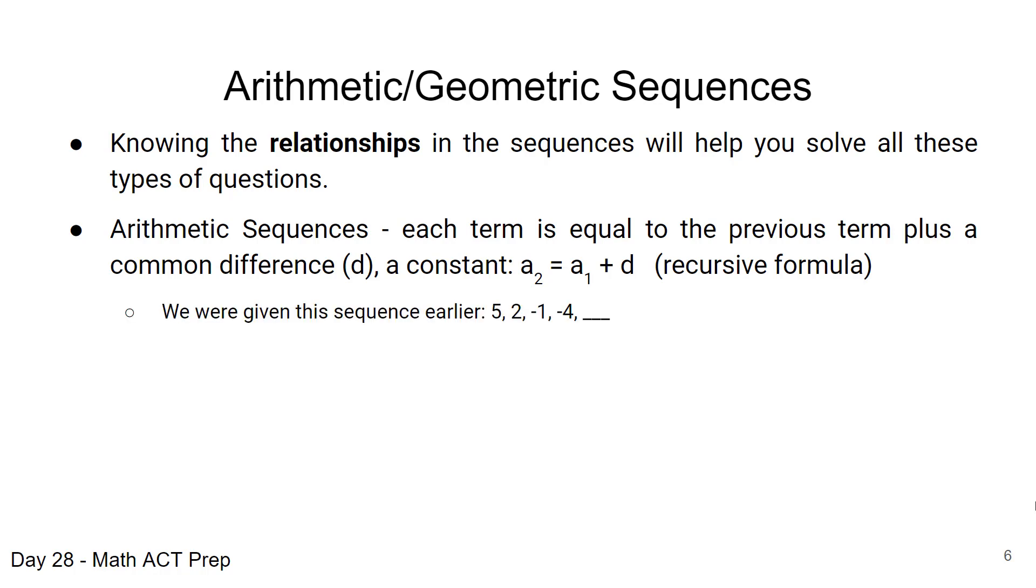So in our previous example we were given this sequence. Let's take a look and see if we can find the recursive formula. We started with 5, that was our initial value, and we found the common difference to be a negative 3. We subtracted 3 from each of the previous terms.